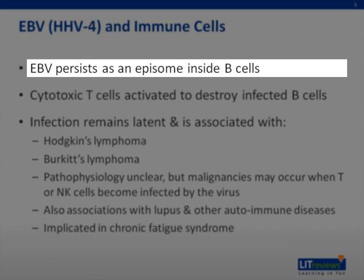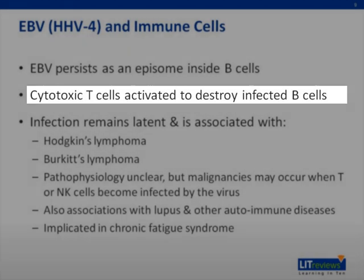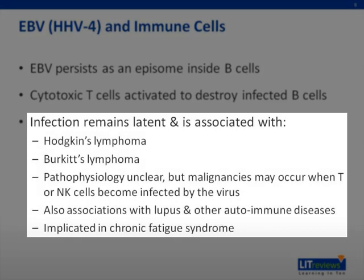EBV, also known as human herpes virus 4, persists as an episome inside B cells — a collection of DNA inside the B cells. Cytotoxic T cells can recognize the infected B cell and activate in an attempt to destroy them. However, they are rarely able to do so, and the infection remains latent inside the B cell. This latent DNA makes a patient susceptible to diseases down the road, including Hodgkin's or Burkitt's lymphoma, malignancies of T or NK cells, autoimmune diseases, and chronic fatigue syndrome, all associated with EBV infections.